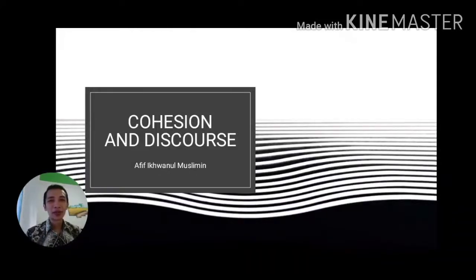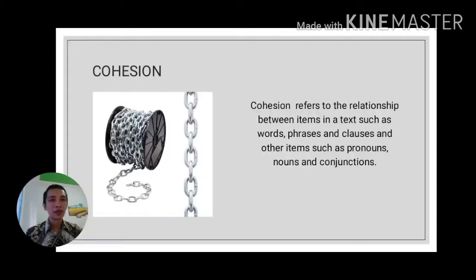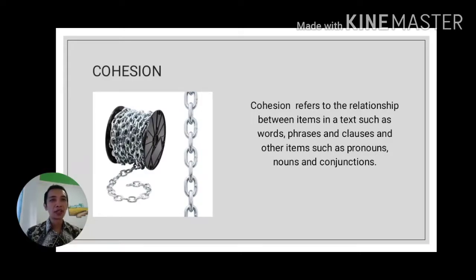Hello students, welcome back to our discourse analysis class. We will discuss something which makes text more understandable and readable — that is cohesion, with me Pa'afif Ikhwan al-Muslimin. Firstly, I need you to observe this picture of chains. What do you understand about this? There is cohesion between the chains here, so it's about the relationship between items in a text such as words, phrases, and clauses.